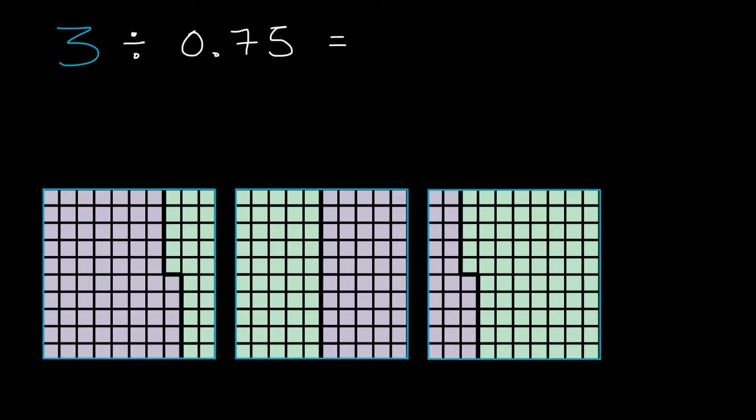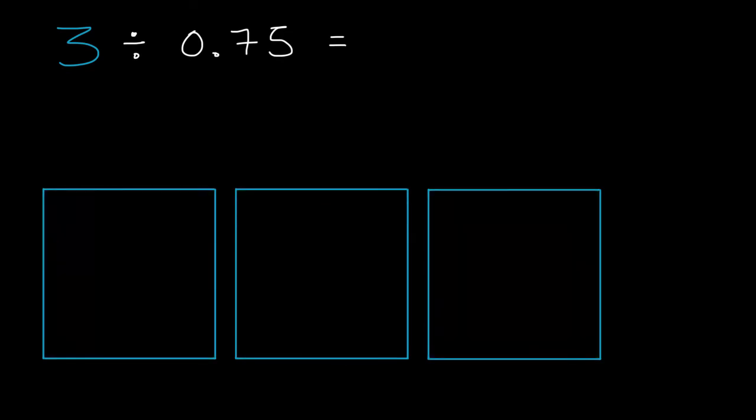So as I said, we started with three ones or three wholes, however you want to think about it. And you could think of division by 75 hundredths as saying, well, how many equal groups of 75 hundredths can you divide these three wholes into?